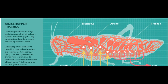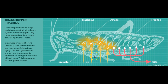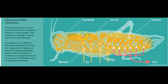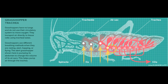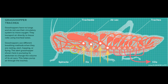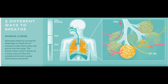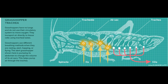Then of course we have something like grasshopper trachea. Oxygen is pulled in through spiracles as air sacs expand and contract, and carbon dioxide leaves through different spiracles and tracheal tubes. So different ways to breathe, but they all accomplish the exact same thing: oxygen in, carbon dioxide out — whether it's humans, birds, or insects.